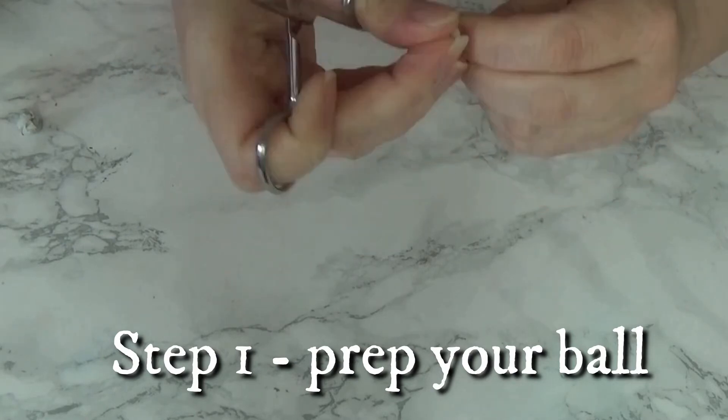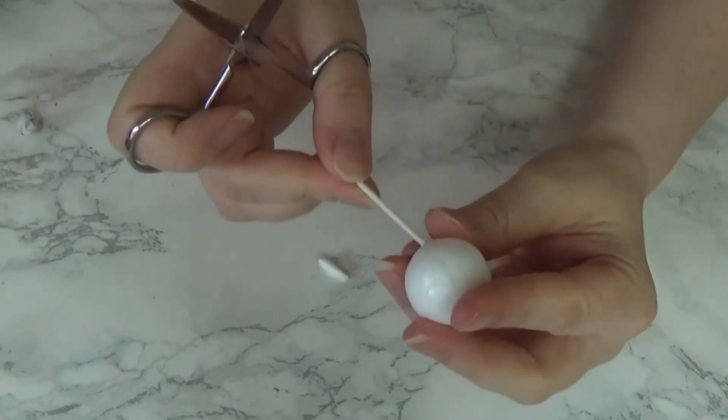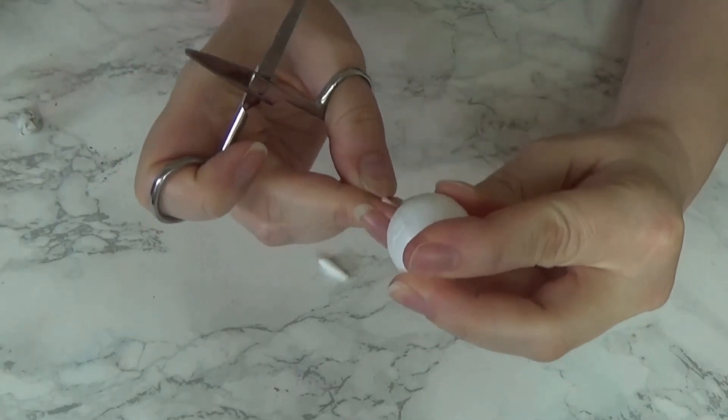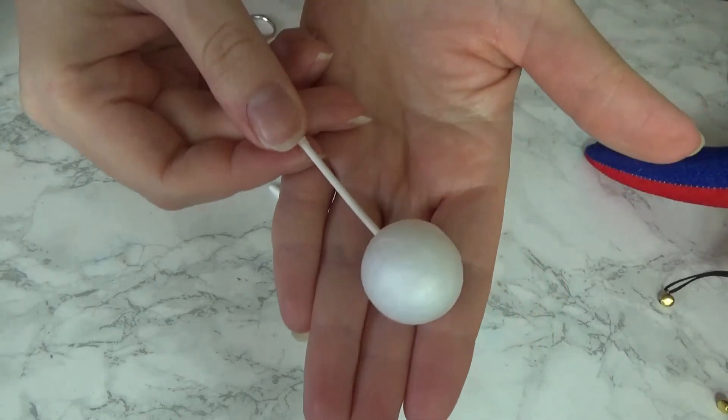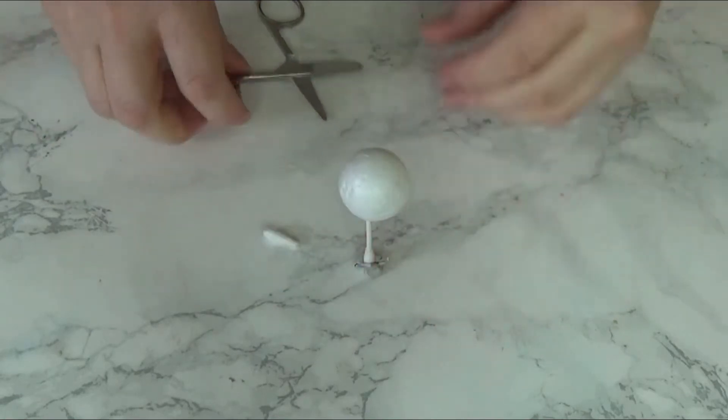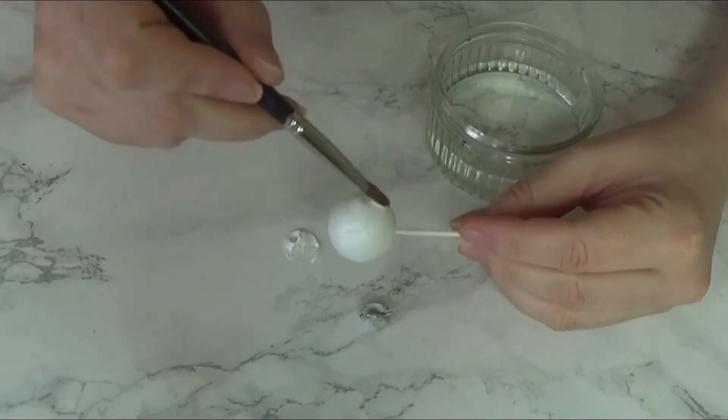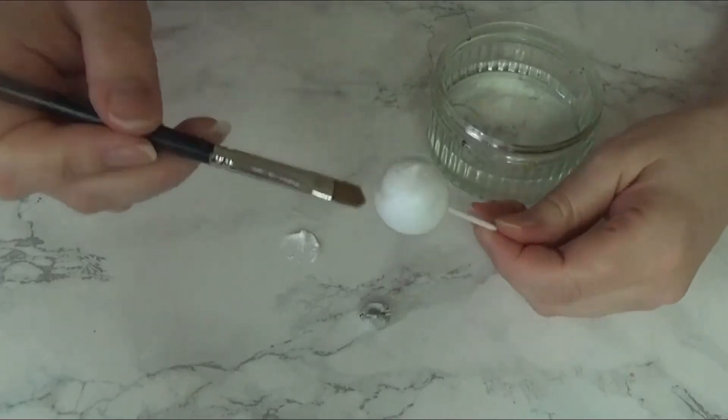First of all, you want a stand for your eyeball so that you can paint it without having to hold the actual ball itself. I just cut the end of a cotton bud and stuck it into the polystyrene ball, then stuck it in some blue tack, but you can use a cocktail stick or just any thin stick basically.